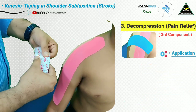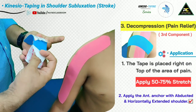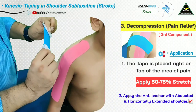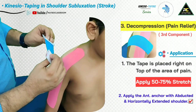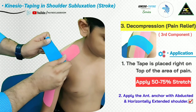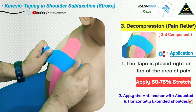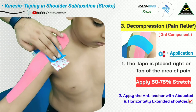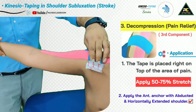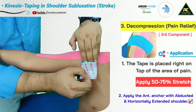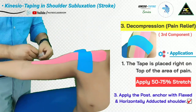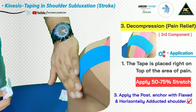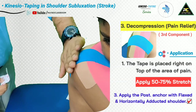Tear the strip from the center, then remove the paper backing toward each end while holding both the distal and proximal anchors. While holding the paper backing at each end, stretch the tape by around 50 to 75 percent and place it right on top of the area of pain. To apply the anterior anchor, ask the patient to abduct and horizontally extend the shoulder, then apply with no tension. Similarly, the posterior anchor of the I-strip is applied by asking the patient to flex the shoulder and horizontally adduct — no tension on either anchor.